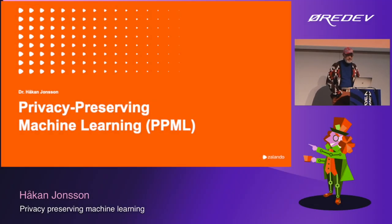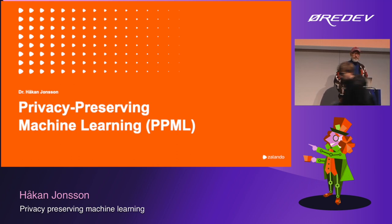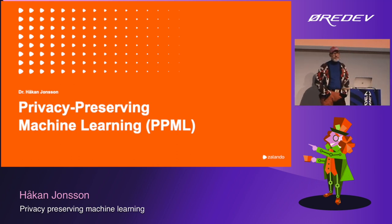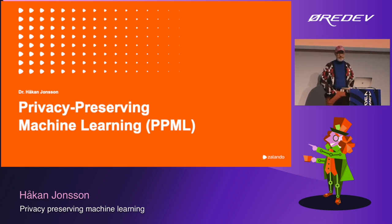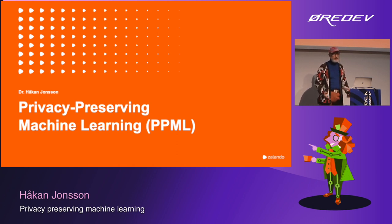Hi, welcome to this session. My name is Håkan Jonsson. I used to live here in Malmö for many years, but for the past five years I've lived in Berlin, where I work for Zalando. There I lead a team called Algorithmic Privacy and Fairness, and we support and enable other machine learning teams in Zalando to develop machine learning products in a responsible way — meaning they are fair, they don't discriminate against customer groups or individuals, they don't leak private data, and they are explainable and transparent to the degree needed.